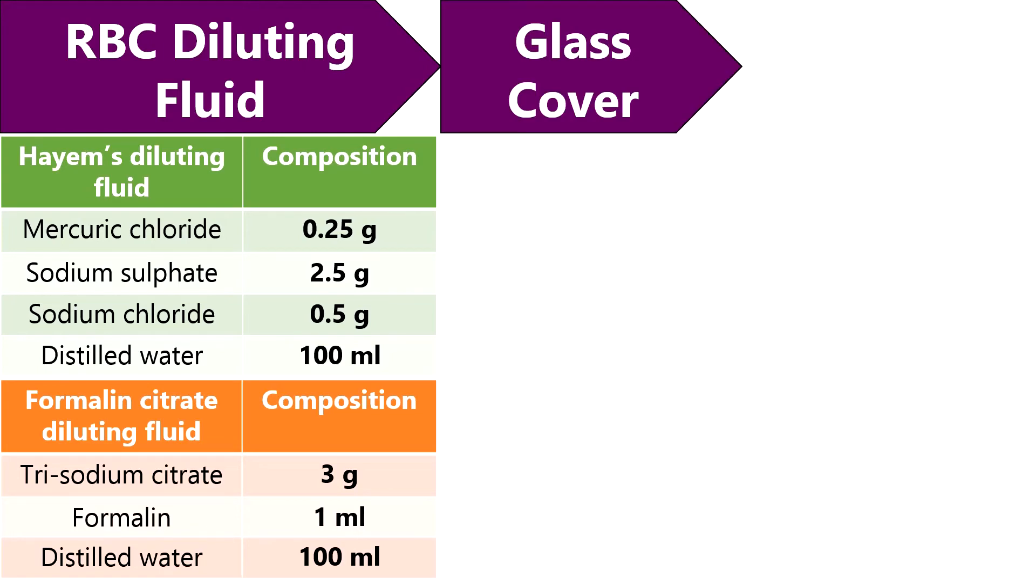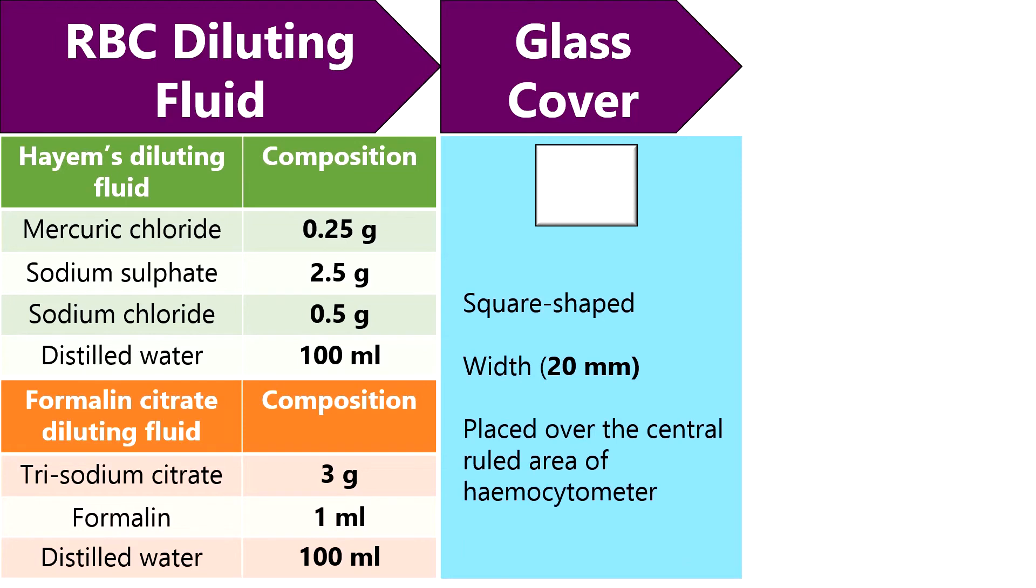Then glass cover is mounted on the top of the hemocytometer, which is generally square shaped. It has a width of 20 mm and it is placed over the central ruled area of the hemocytometer.